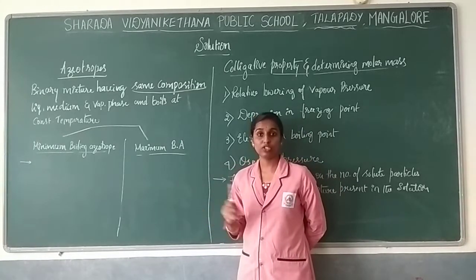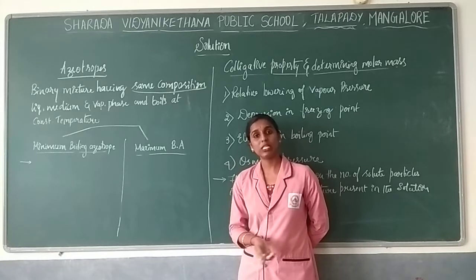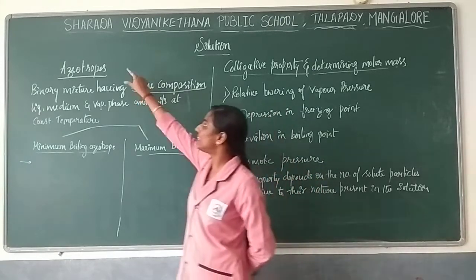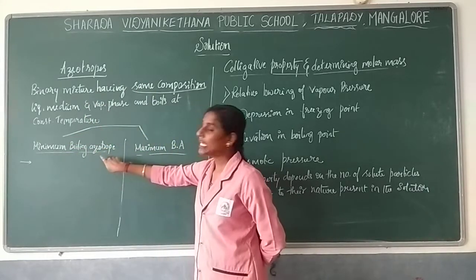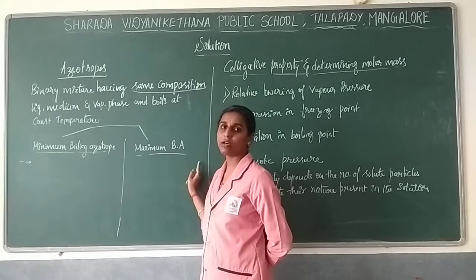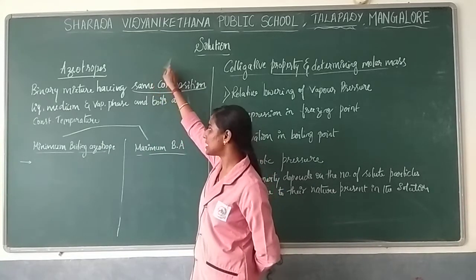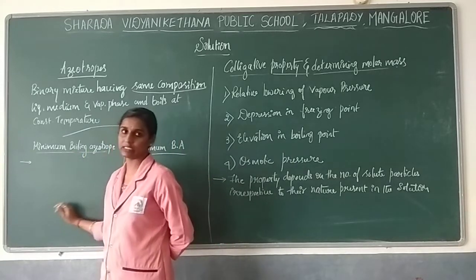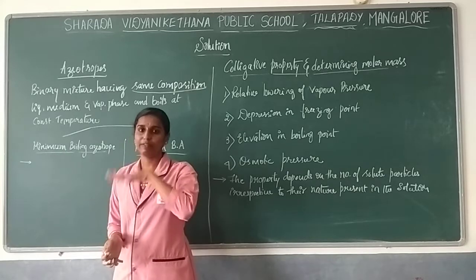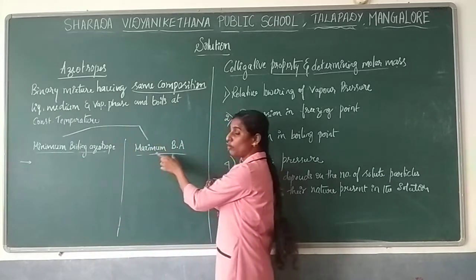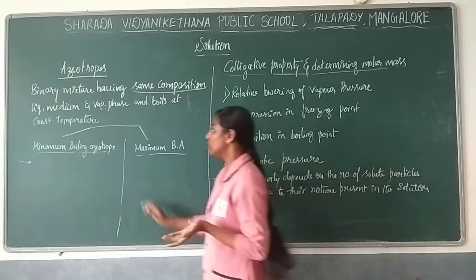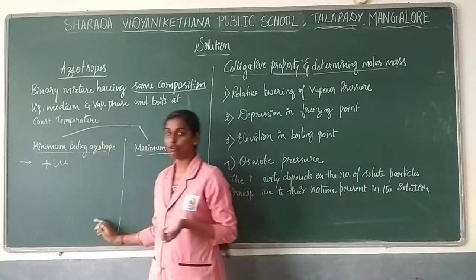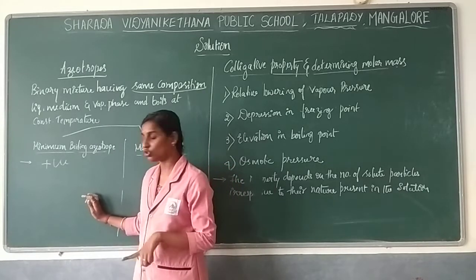There are two types of azeotropes: minimum boiling azeotrope and maximum boiling azeotrope. In a minimum boiling azeotrope, the boiling point is lower. In a maximum boiling azeotrope, the boiling point is higher. The minimum boiling azeotrope shows positive deviation.